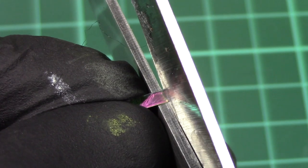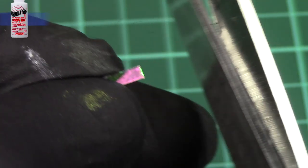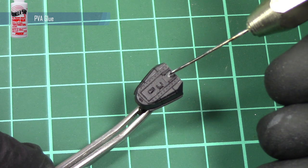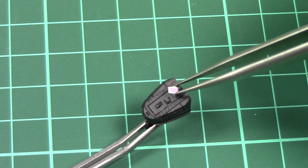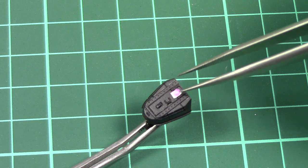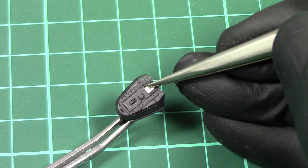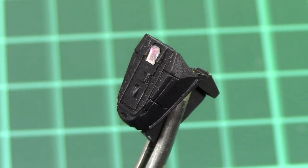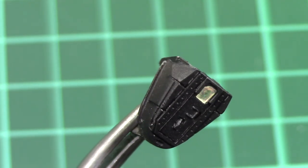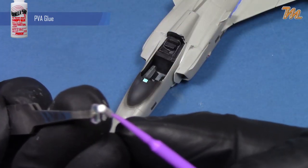After some careful trimming I use PVA glue to put the part in its place. When that is done I can attach the screen.